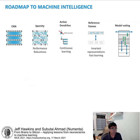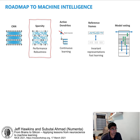Subutai: Jeff laid out the neuroscience foundations and components of this roadmap, focusing on reference frames and model voting. My talk will focus on realization — how do we take these ideas and actually implement them in practical systems? I'll focus on one specific piece: sparsity. I'll cover properties of sparse networks, how they're instantiated in the brain, how we train sparse networks, and recent progress in implementing them in hardware to realize performance and robustness gains.